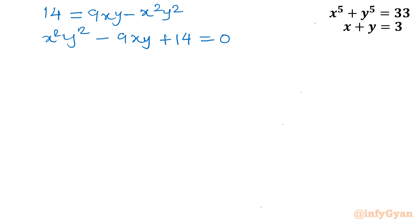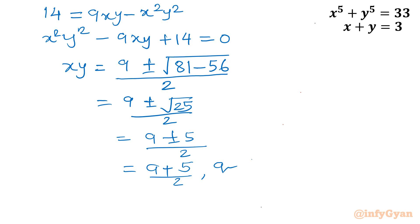Now this is quadratic in xy. So I will find out xy. Let me apply quadratic formula. So a is 1, b is minus 9, c is 14. Minus b, 9 plus minus square root b square, 81 minus 4ac, so 56, 14 times 4 is 56, over 2. Now 81 minus 56 is 25. So 9 plus minus square root 25 over 2. I will get 9 plus minus 5 over 2. 14 over 2 is 7 and 9 minus 5 is 4 over 2. So we are having xy equal to 7 and 2.